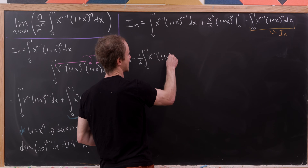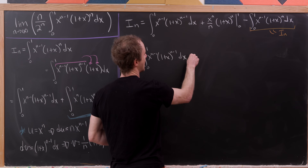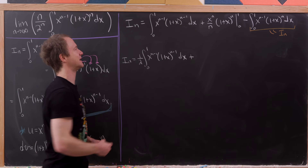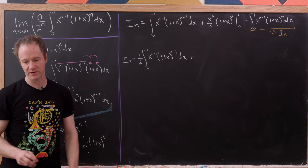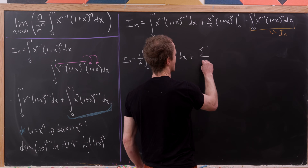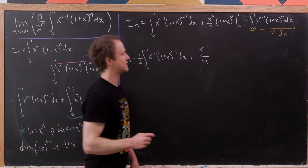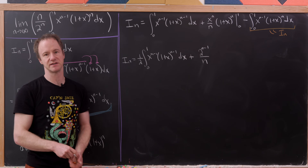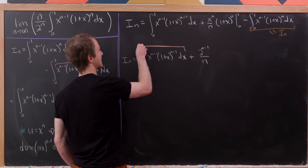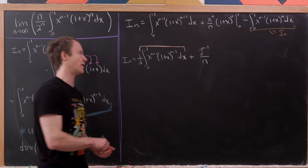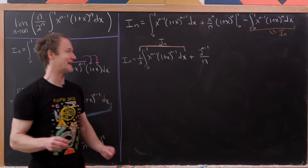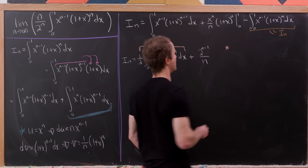So I sub n equals one half the integral from 0 to 1 of x to the n minus 1 times 1 plus x to the n minus 1 dx, plus one half the evaluation term. Adding I sub n to the left-hand side and dividing by 2 leaves us with 2 to the n minus 1 over n, since the uv evaluation gives 2 to the n over n. I'm going to give this integral the name J sub n, and perform an integration by parts on that as well.